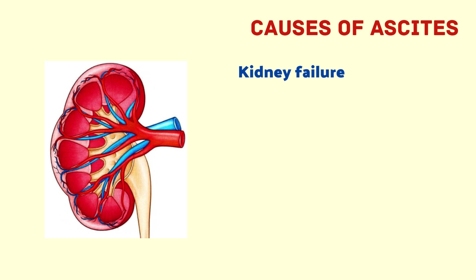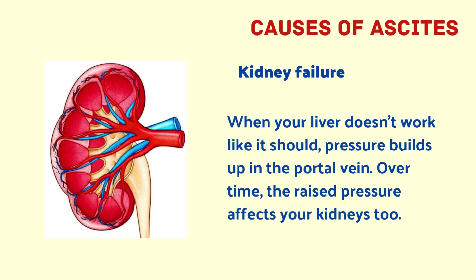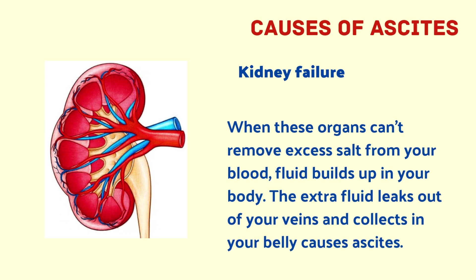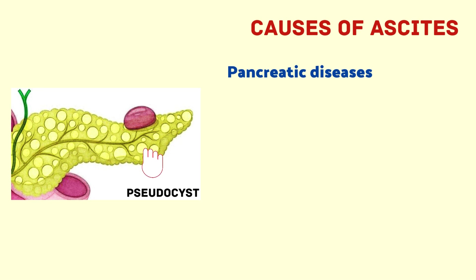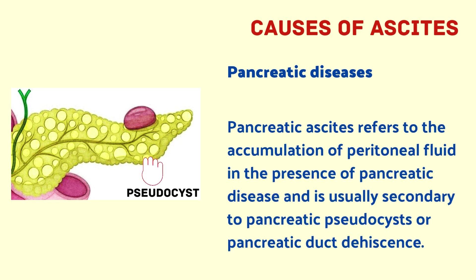The next cause is kidney failure. When your liver doesn't work properly, pressure builds up in the portal vein. Over time, the raised pressure affects your kidneys too. When the kidneys cannot remove excess salt from your blood, fluid builds up in your body — the extra fluid leaks out of your veins and collects in your belly, causing ascites.